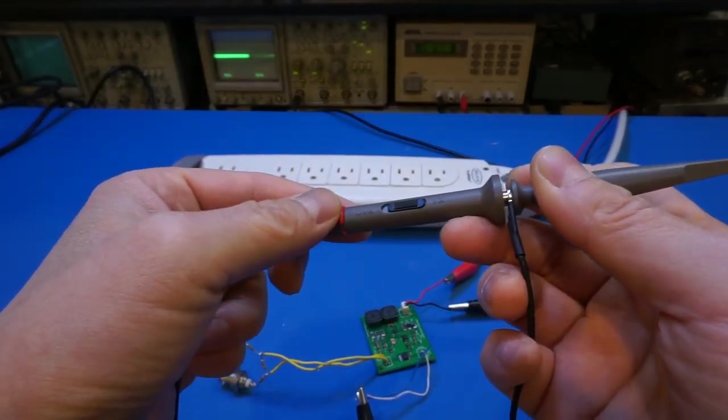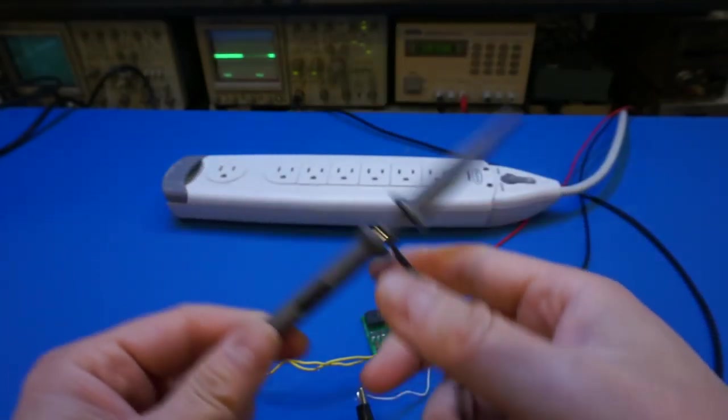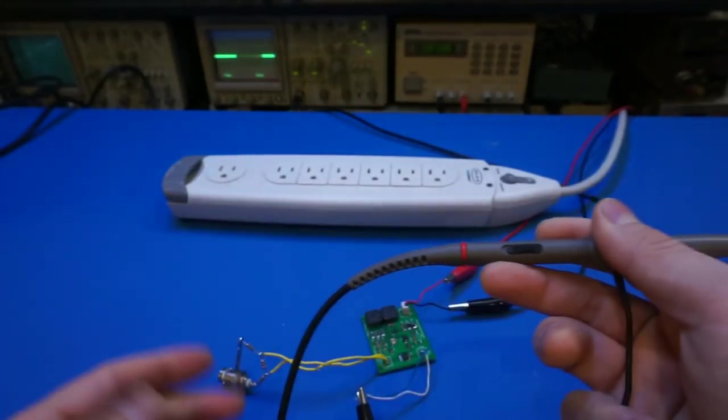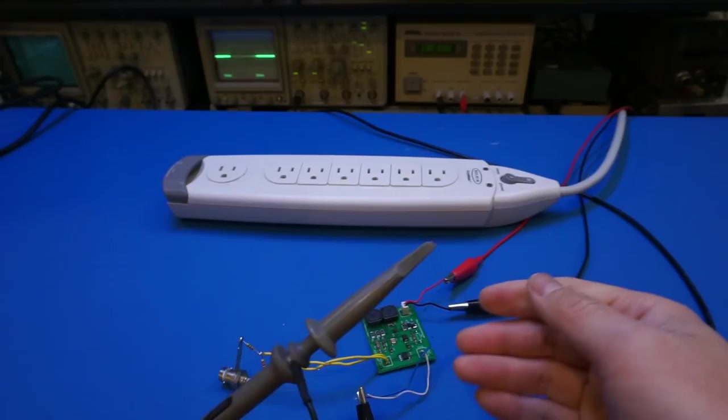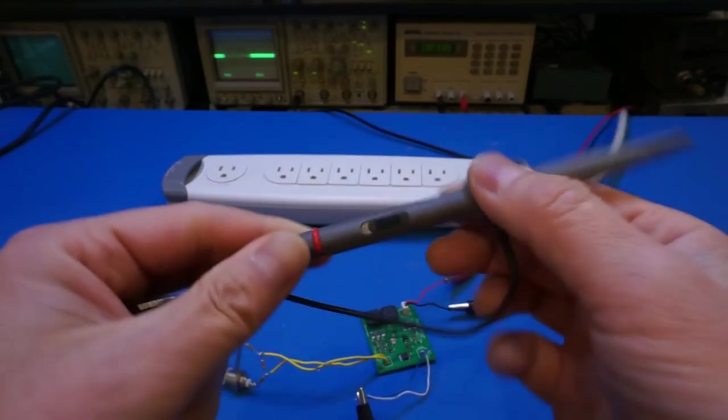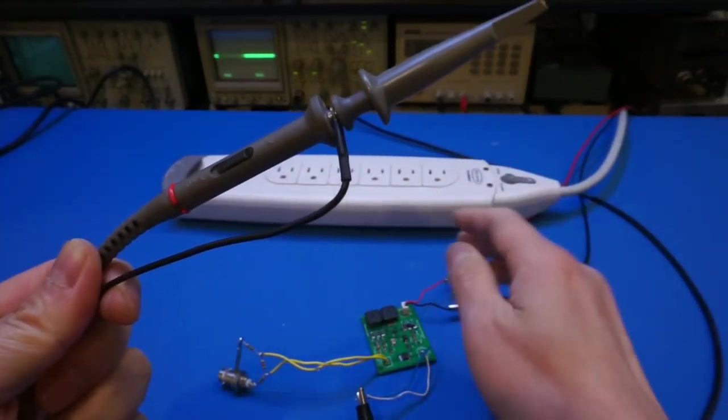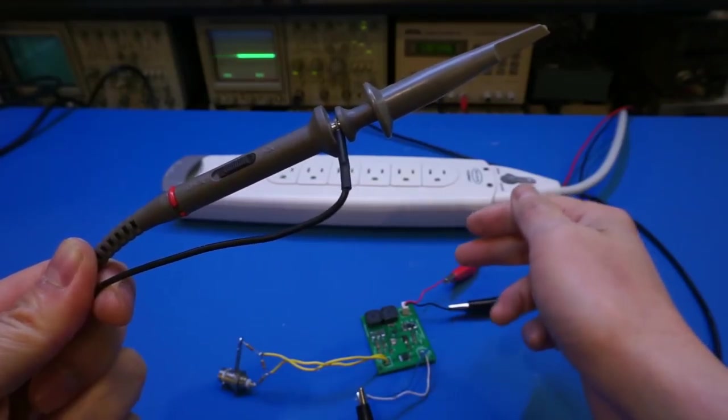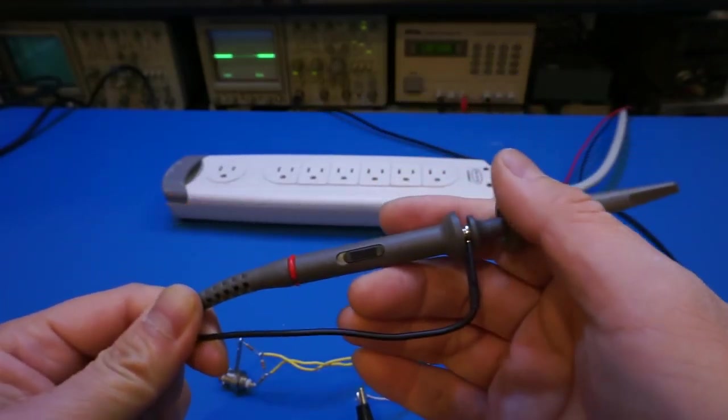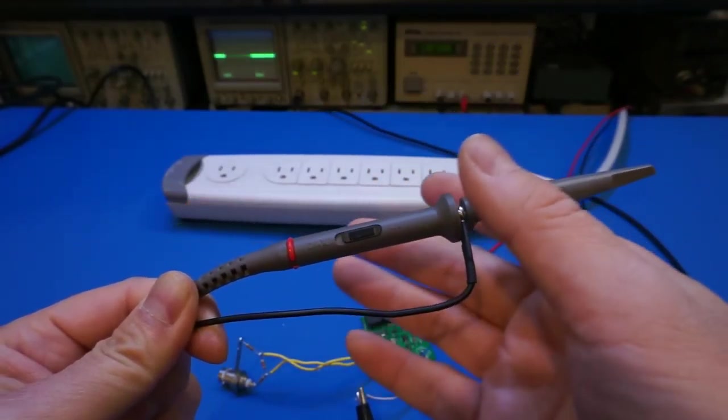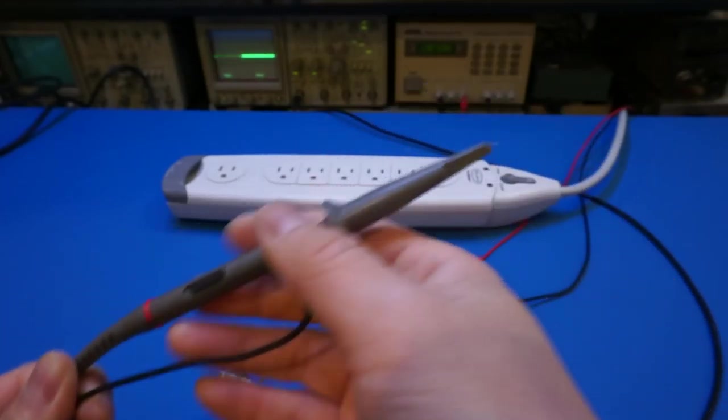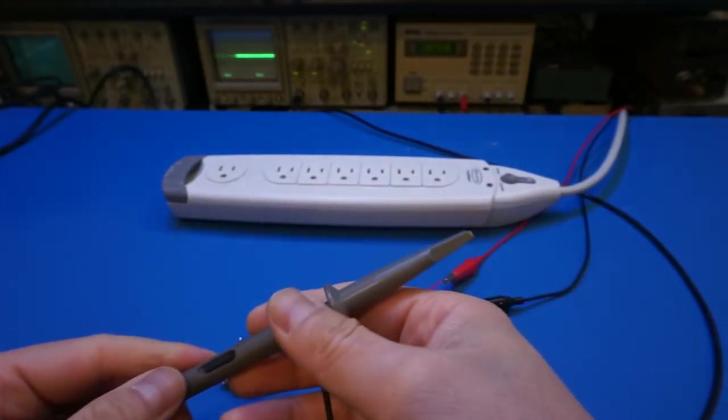Now I could have just used the times 10 probe, but the problem is it is a little bit towards the upper limit of what this differential amplifier's input. So the waveform would appear a little clipped. And that's why I'm using this resistive divider here.